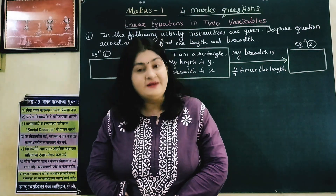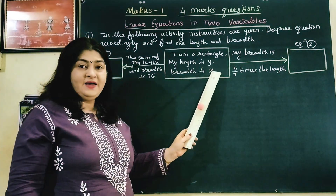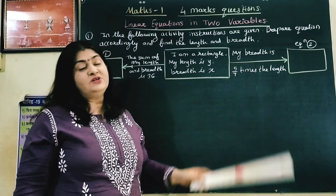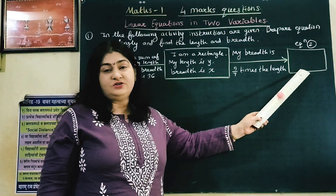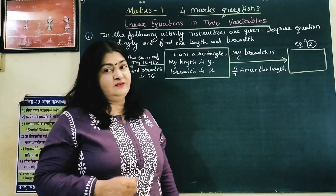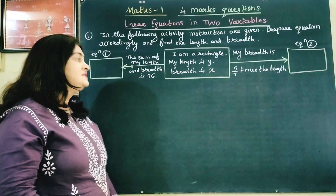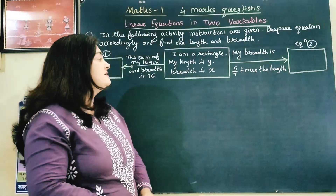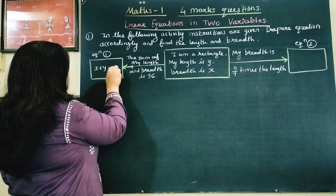In the first sum there is an activity. A rectangle is given with length Y and breadth X. There are two arrows with conditions. By reading these conditions we have to form equation 1 and equation 2, solve them, and find the length and breadth. The first arrow says the sum of length and breadth is 36. So the first equation is X plus Y equals 36.